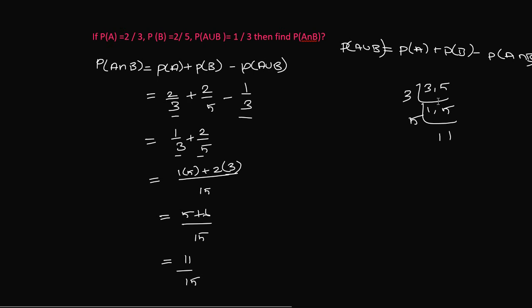3 times 5 is 15. So 3 and 5, LCM is 15. For 3 table, 15 divided by 3 is 5 times. So 3 times 5 is 15.